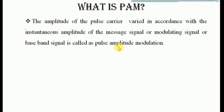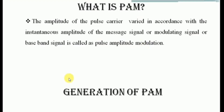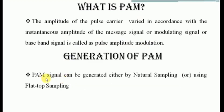Now let us discuss the methods available to generate a pulse amplitude modulation signal. The PAM signal can be generated either by natural sampling or by flat-top sampling. We will briefly discuss both natural sampling and flat-top sampling, including their definitions and how the waveforms look.